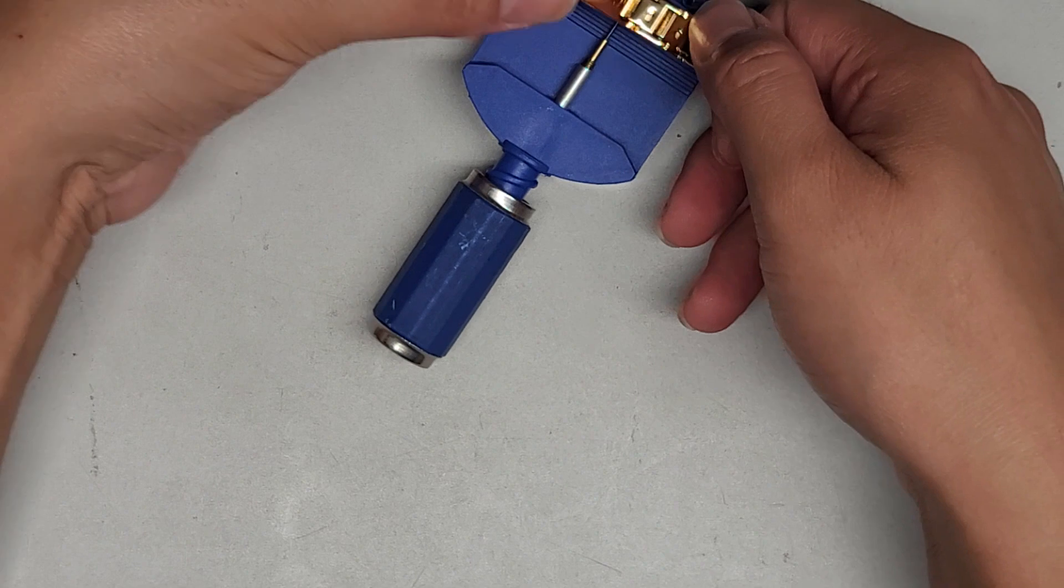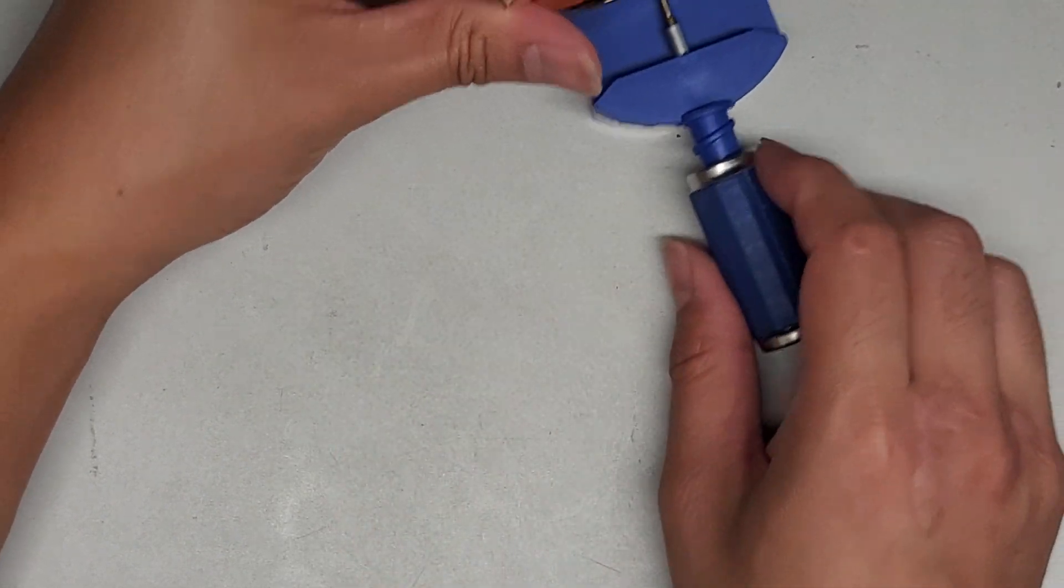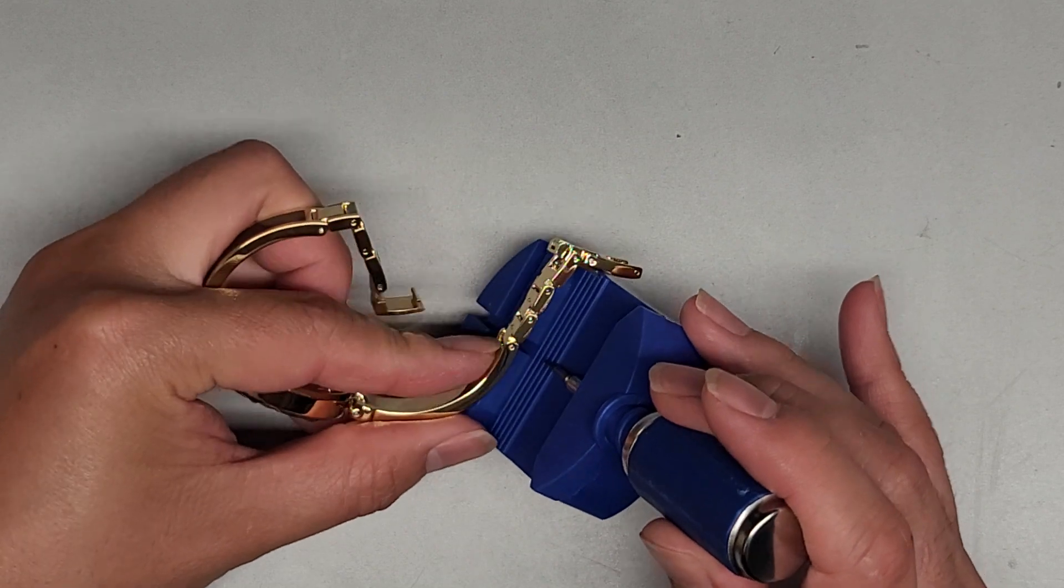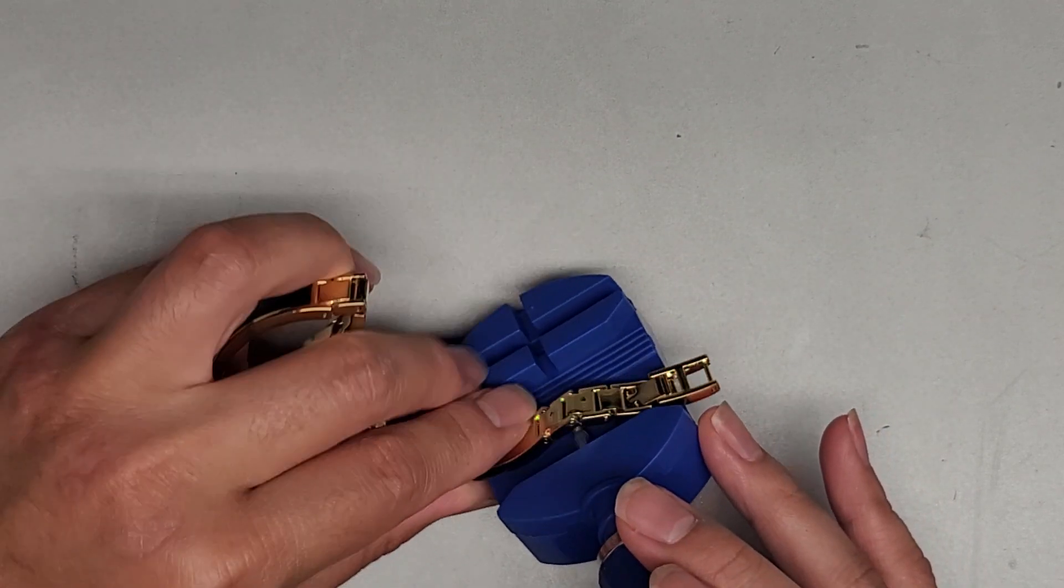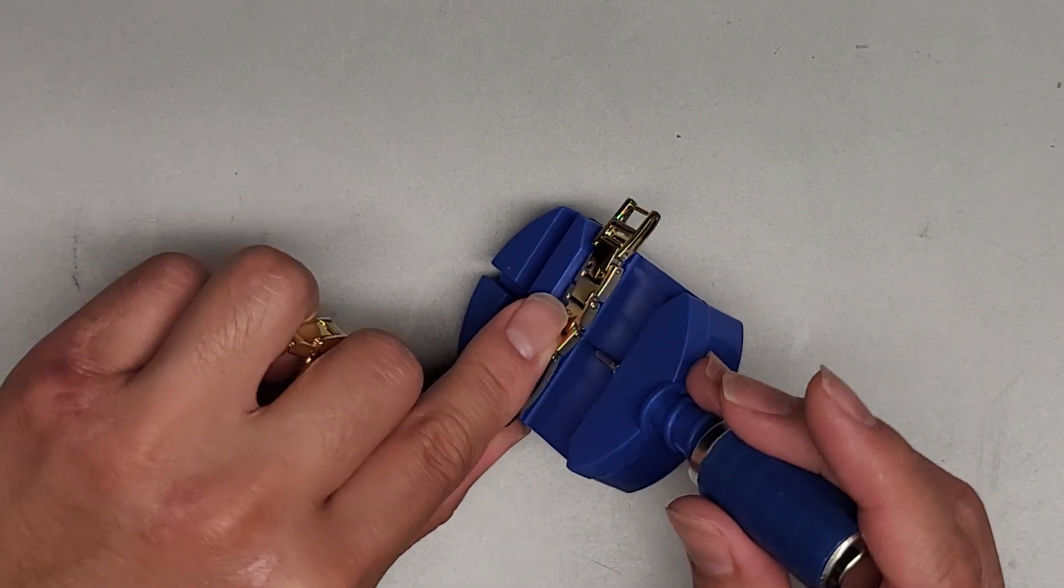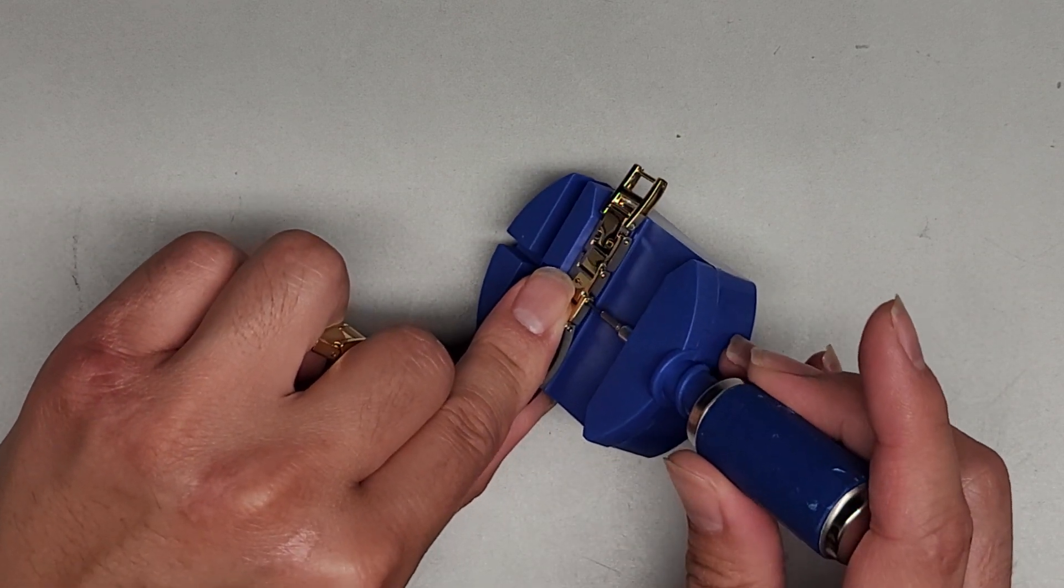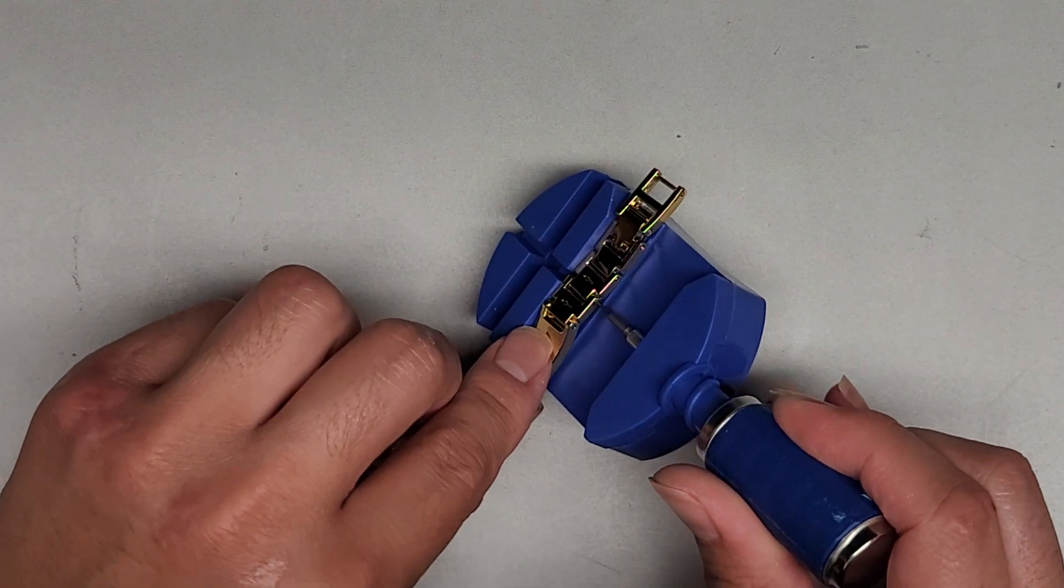So we're going to just line this up, and if it fits right, then we can use this tool. So basically, you're lining it up so that this little pin will push through the side here, and then as you tighten the screw, it should push it all the way out.